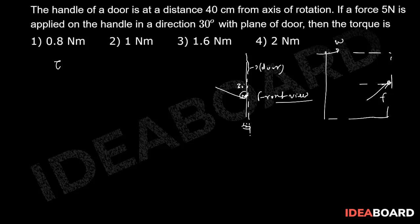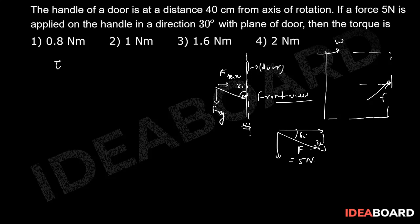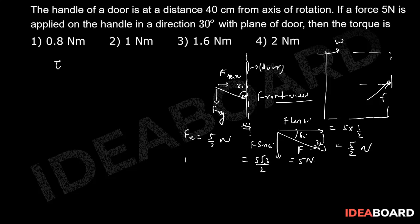To calculate the value of torque, first you need to figure out the components of the force. Force will have two components: Fy and Fx. This angle is going to be 60 degrees because the given angle is 30 degrees. So Fx = F cos60° = 5 × (1/2) = 5/2 newtons, and Fy = F sin60° = 5 × (√3/2) = 5√3/2 newtons.